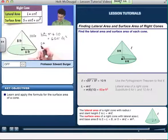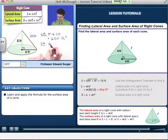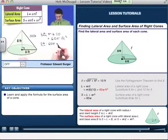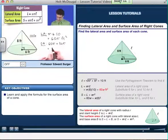And what about the surface area? Well, it's no big deal. I take 60 pi, and I add to it the area of the base, which is pi r squared, which in this case is going to be 6 squared, which is 36 pi. And so I see an answer of 96 pi feet squared.